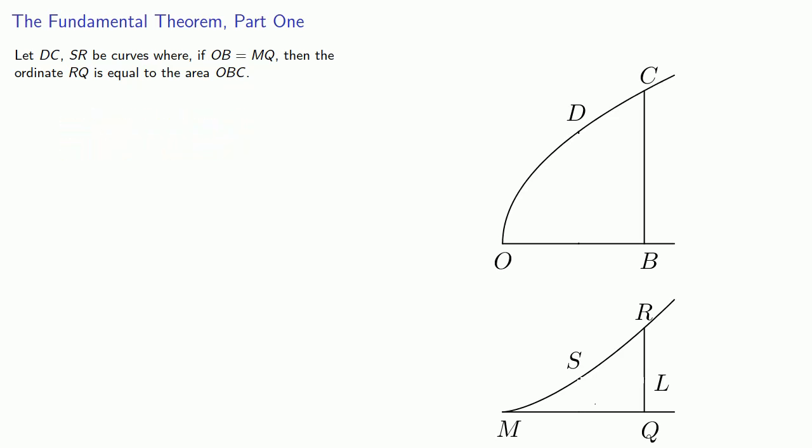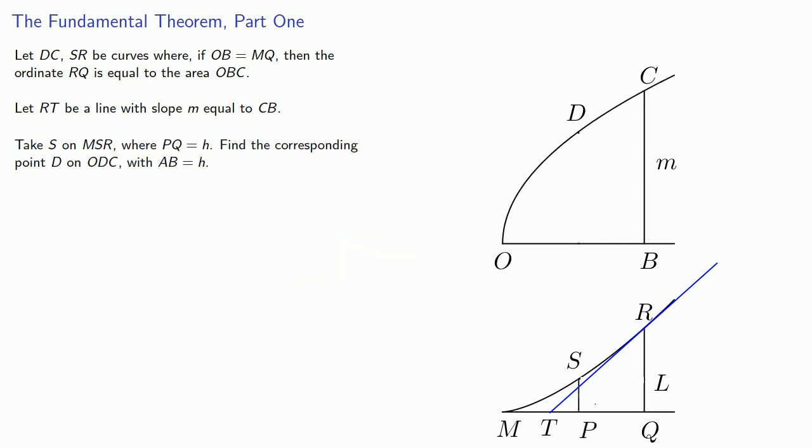In modern terms we might call MSR the curve of area because the ordinate of the curve gives the area under ODC. Again in modern terms let RT be a line with slope M equal to CB. Consider any other point S on MSR where PQ is equal to H. Remember OB and MQ are equal, so we'll mark off AB equal to H and fill out some parallel lines.